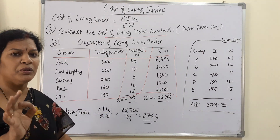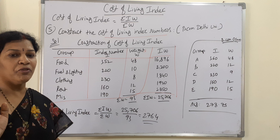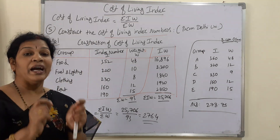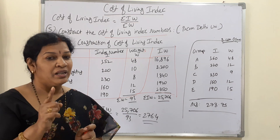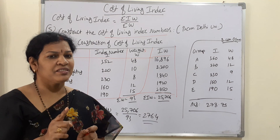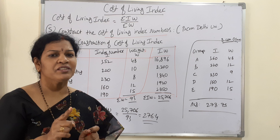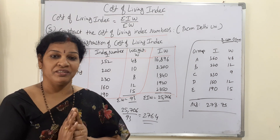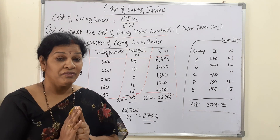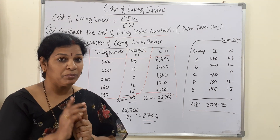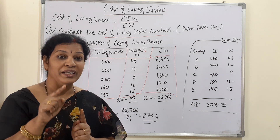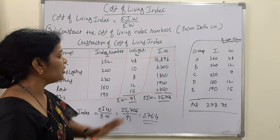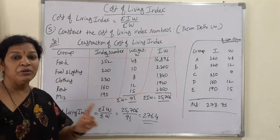So the cost of living index is 276.4. Remember, for the cost of living index, the formula is Sigma IW divided by Sigma W — index numbers and weights are given directly, and you apply them in this formula.